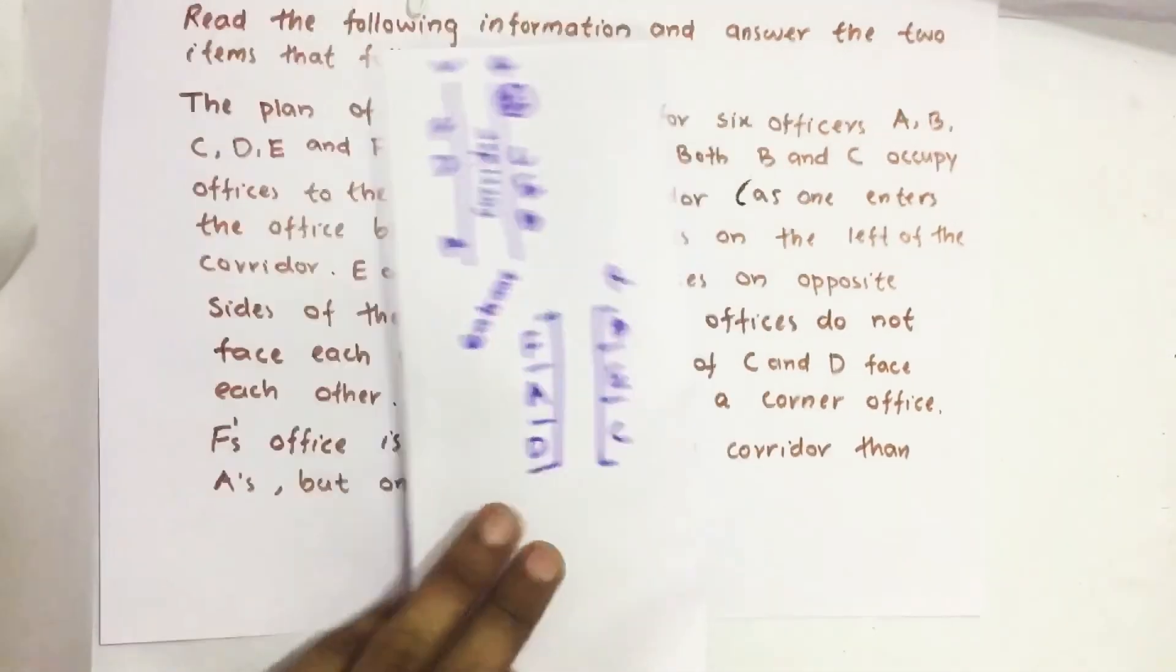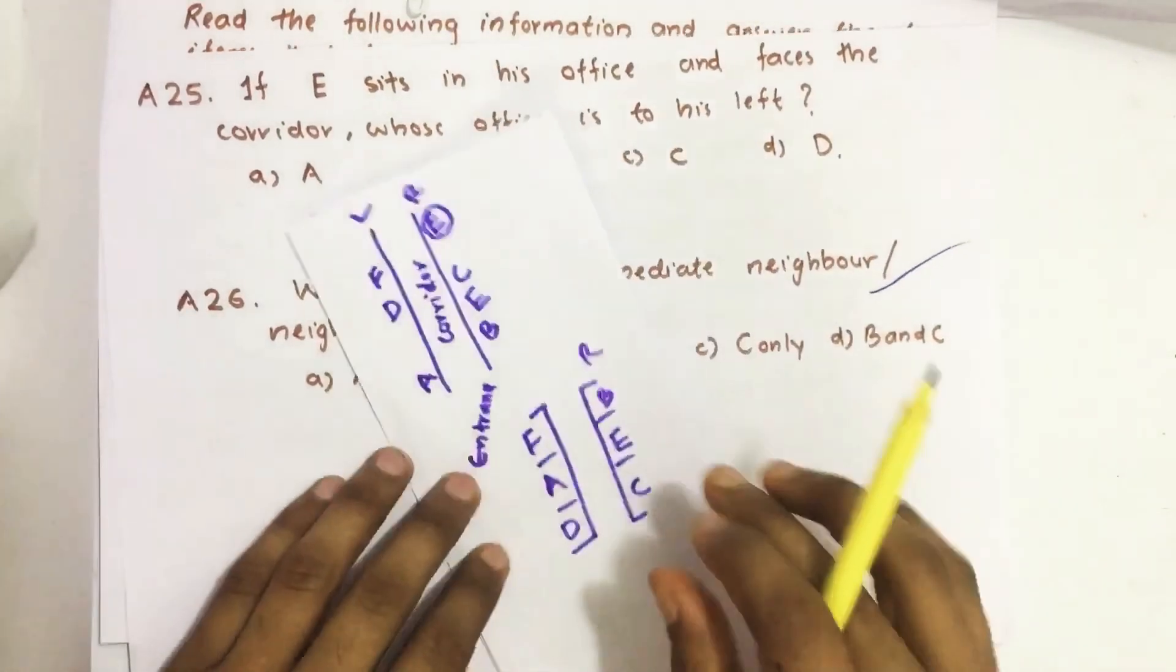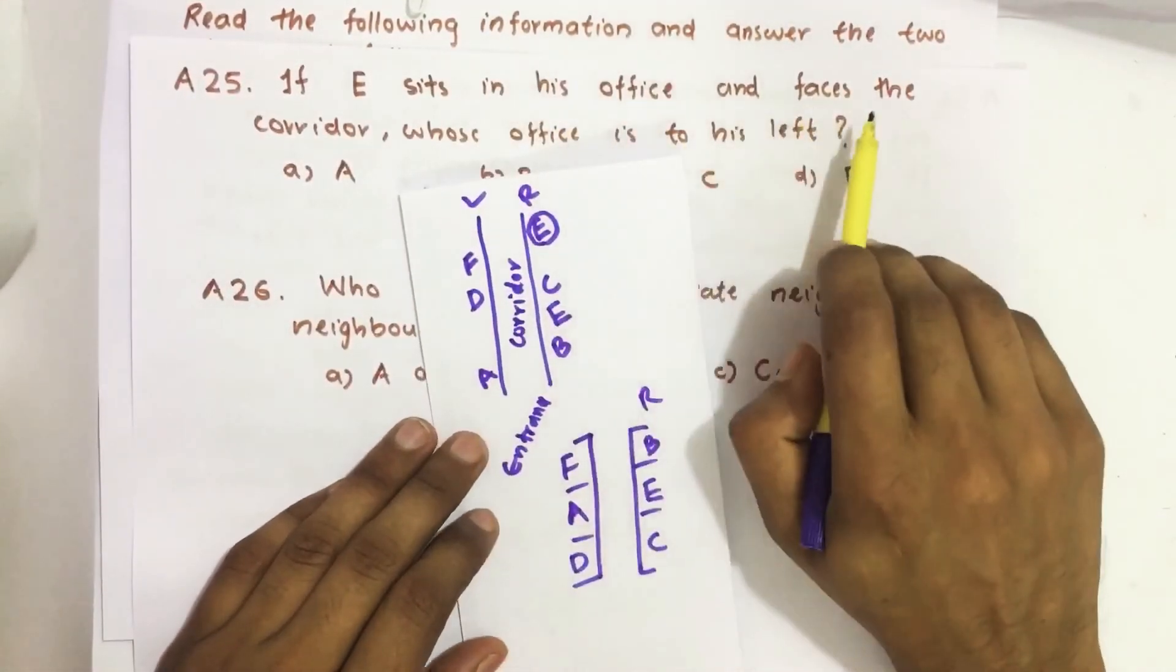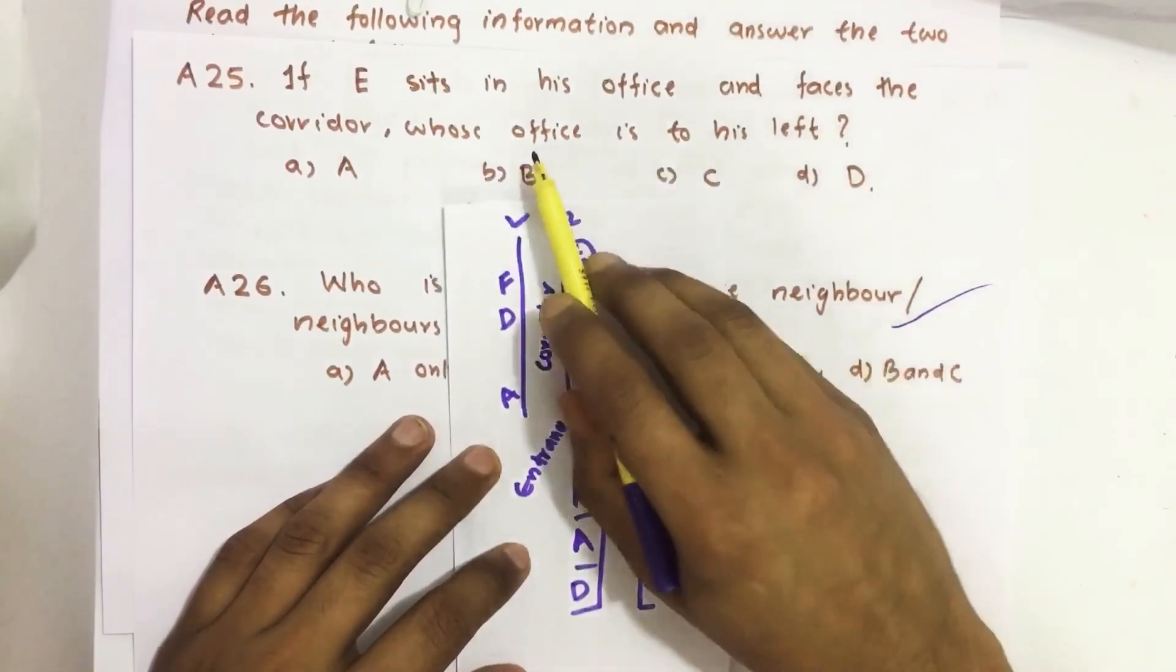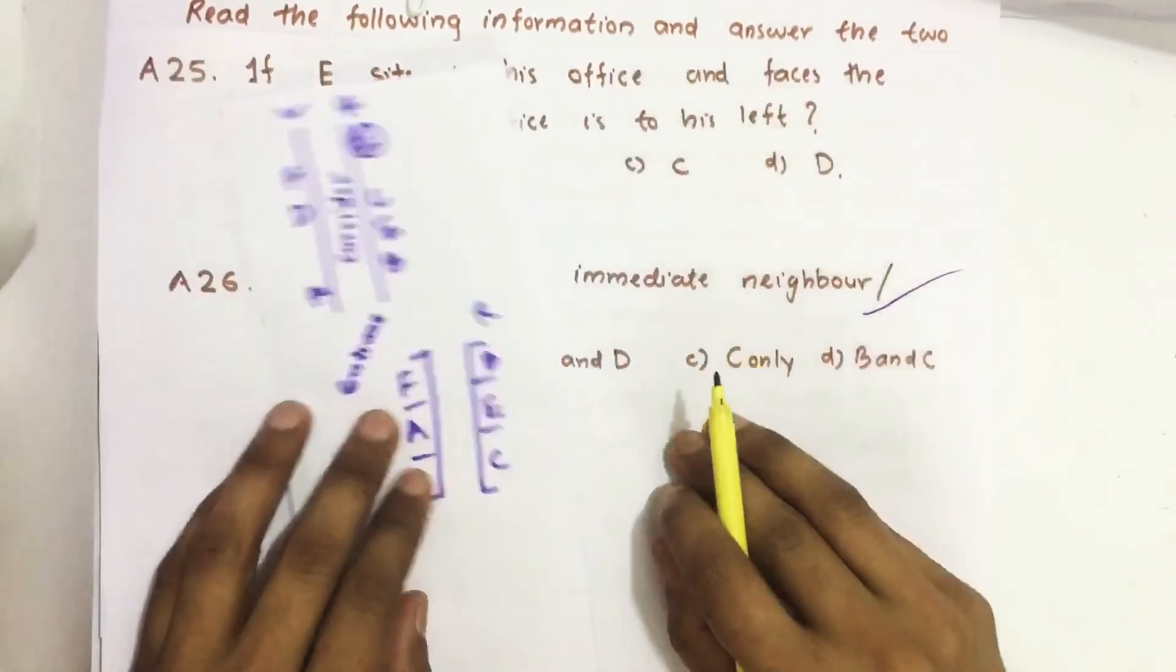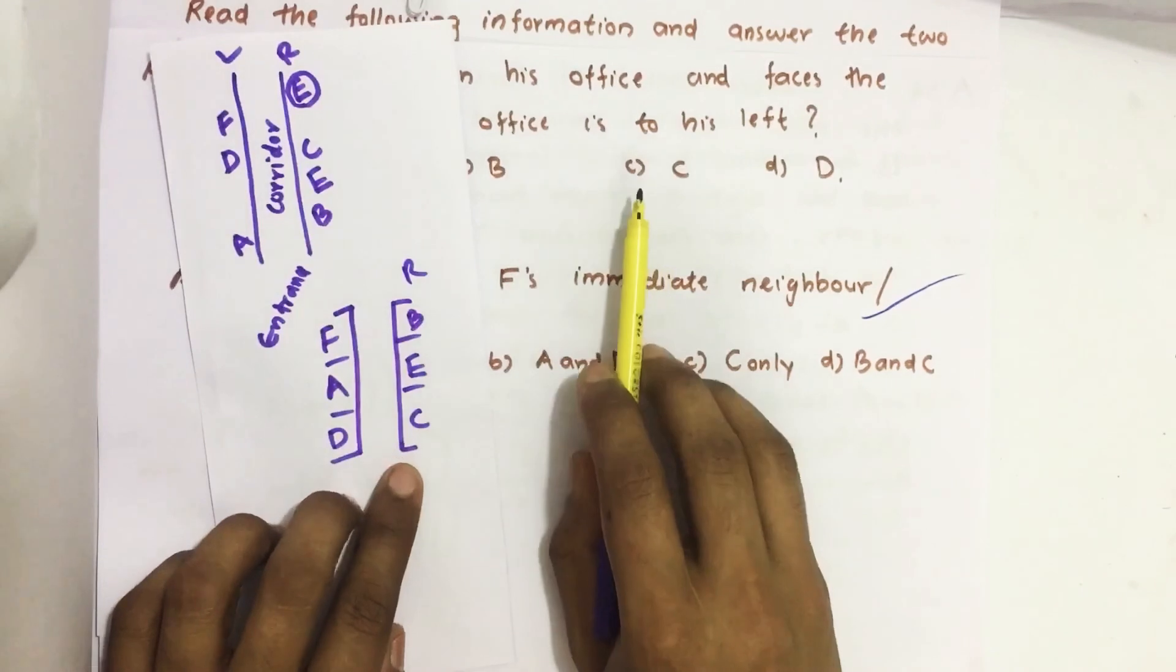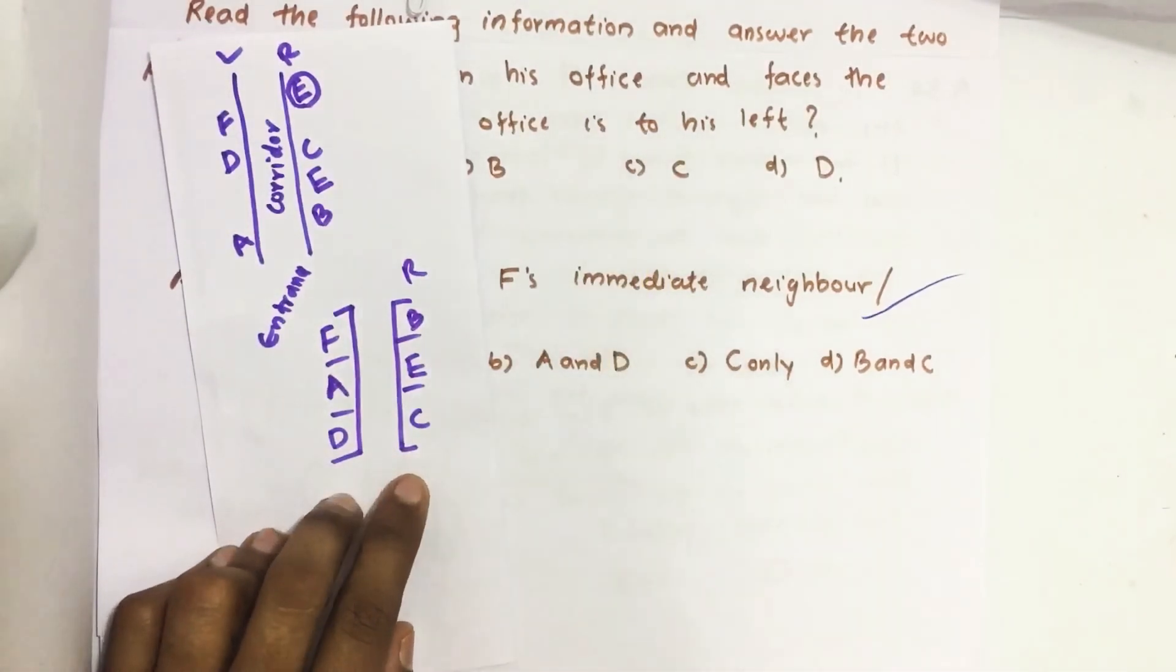Now let us see the question, answer the questions. If E sits in his office and faces the corridor, whose office is to his left? So here it is C. Option number C is our answer.